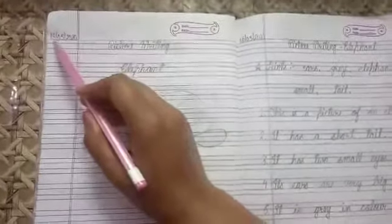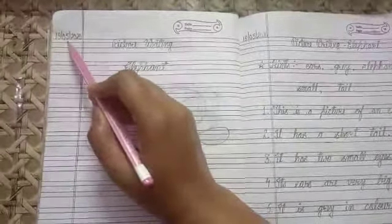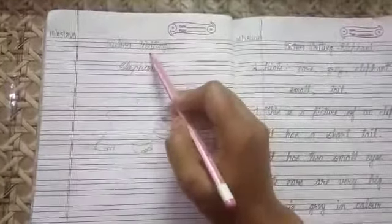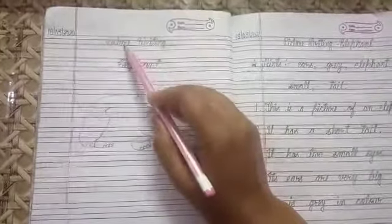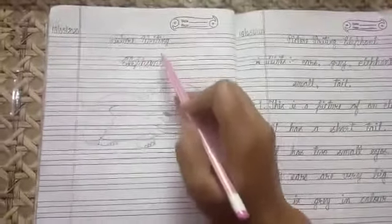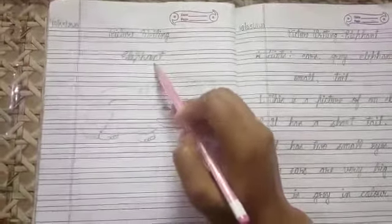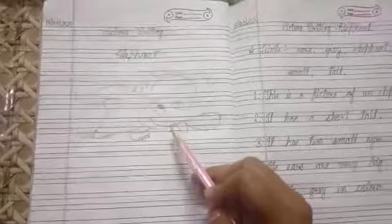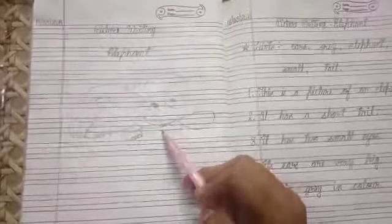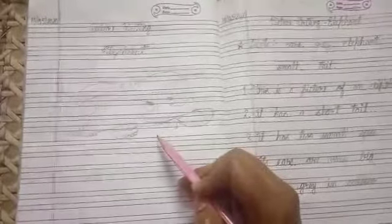Today we will do picture writing. First of all, you have to mention today's date, 18th of May 2020. Then in the first line write picture writing in center, and in the second line elephant. Draw a beautiful elephant. I will give you the picture of this elephant and you can paste any other elephant picture, but try to draw by yourself.